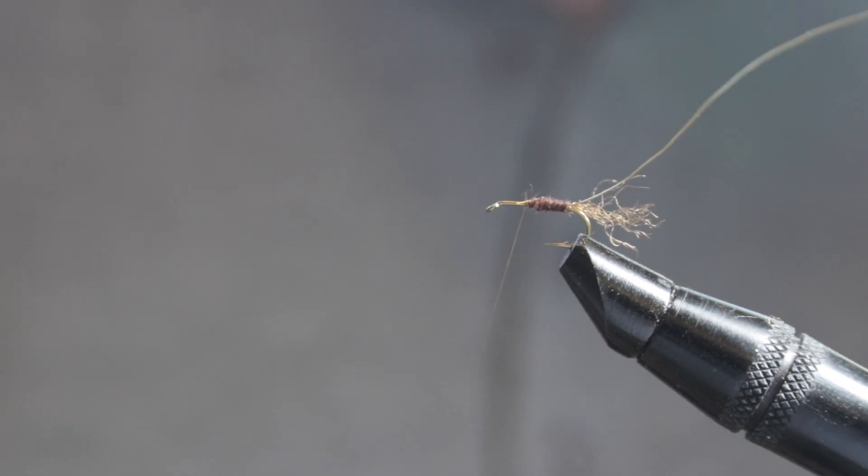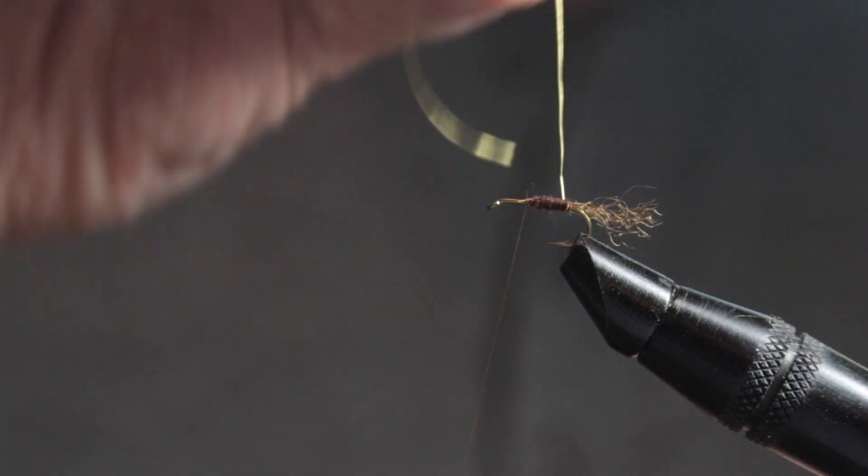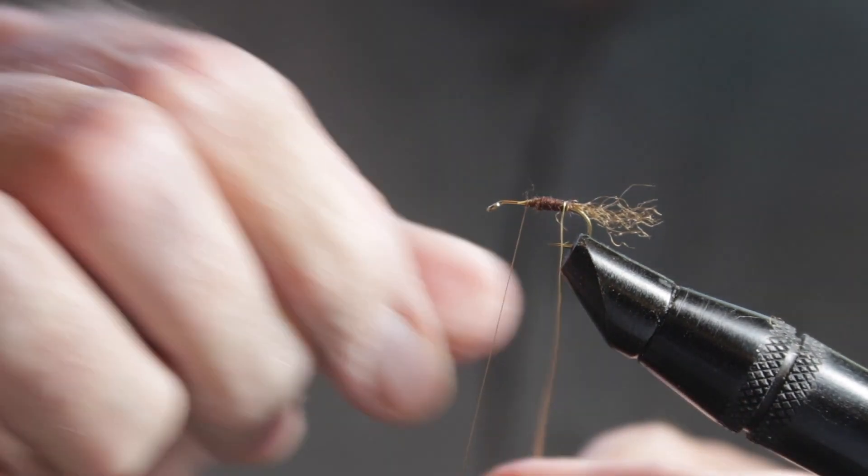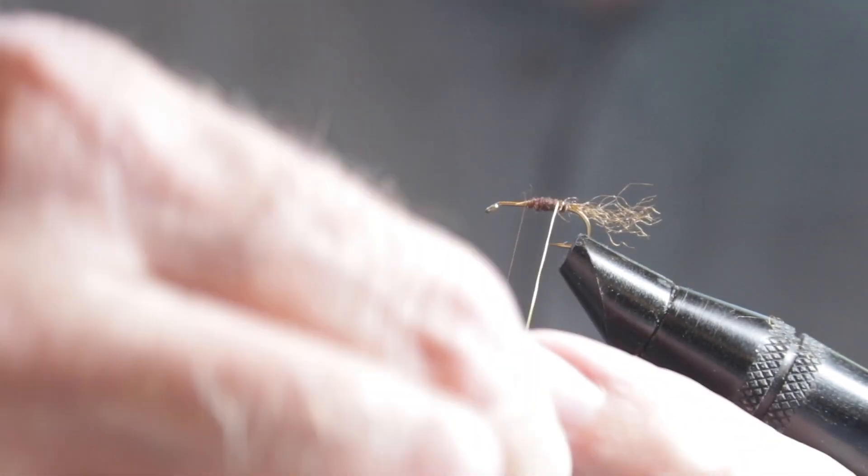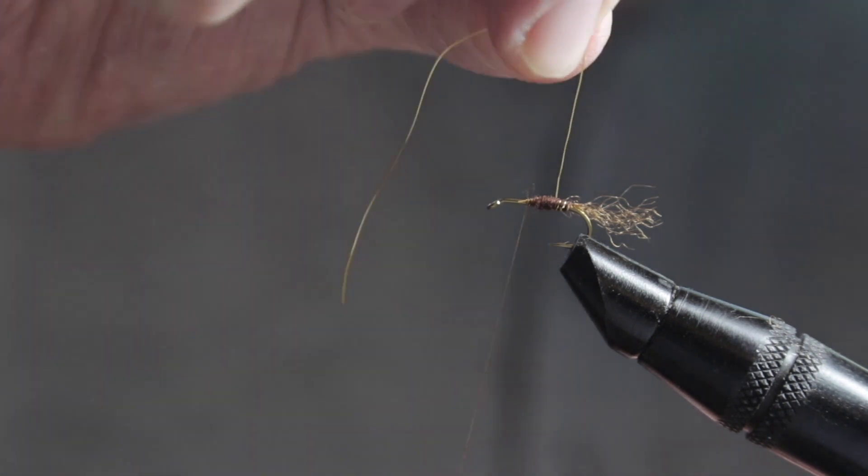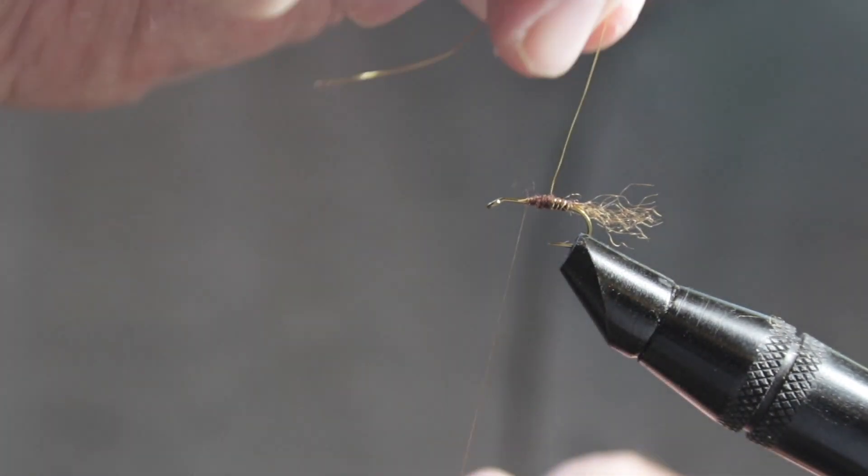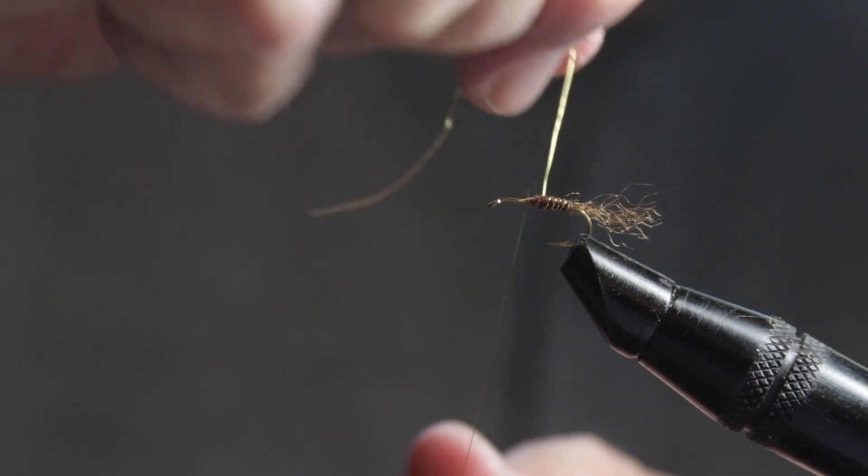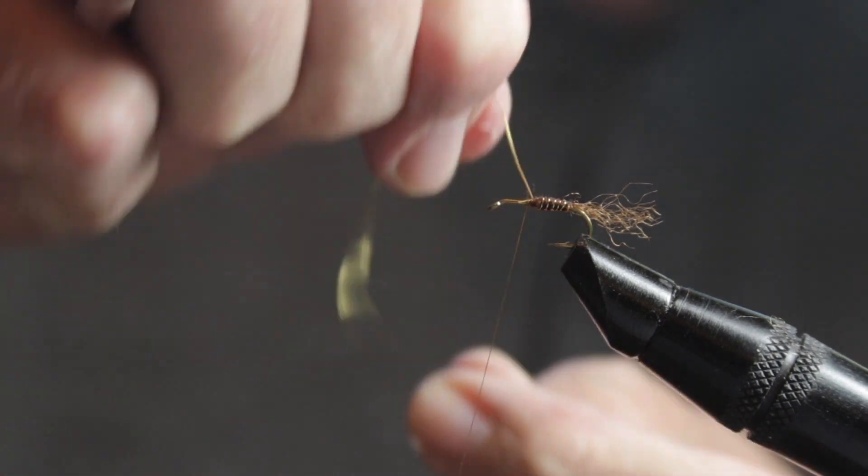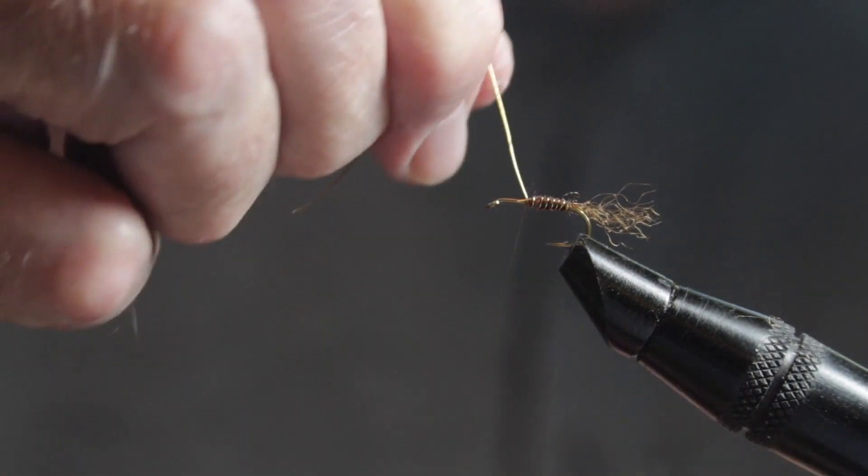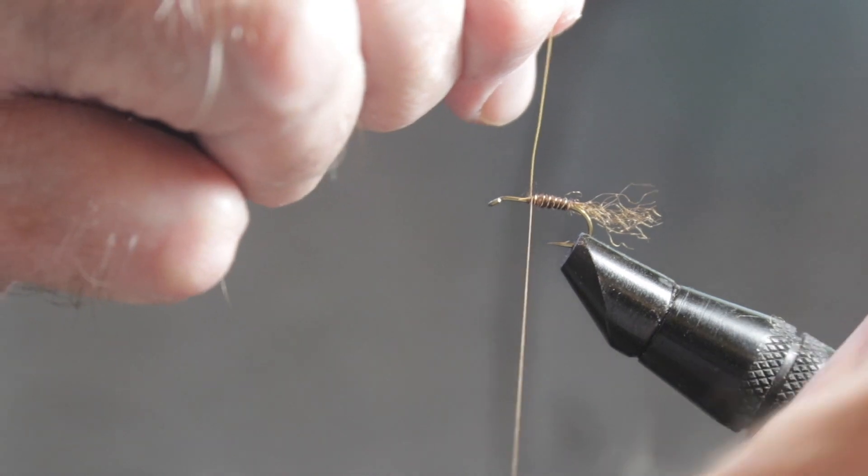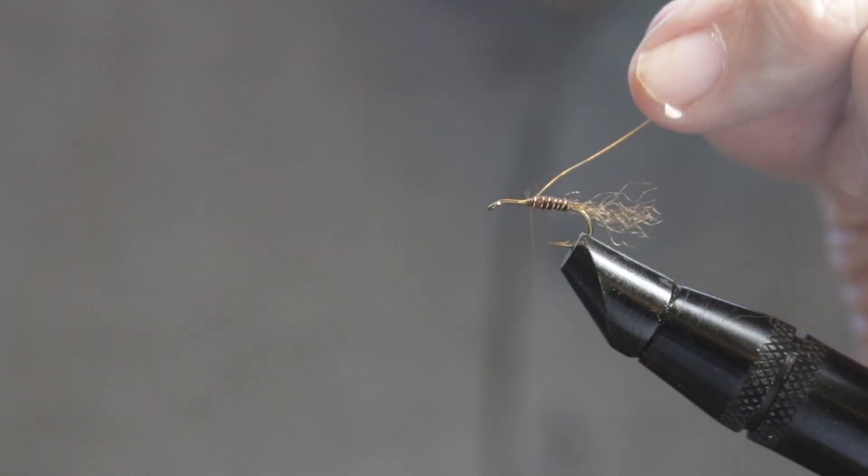And then we'll take the gold wire. And make about, oh, between five and six turns or between four and six turns. Whatever works for you to make a nice segmented appearance. And when we're done with that, we'll helicopter the wire off. And make sure that that's clear.